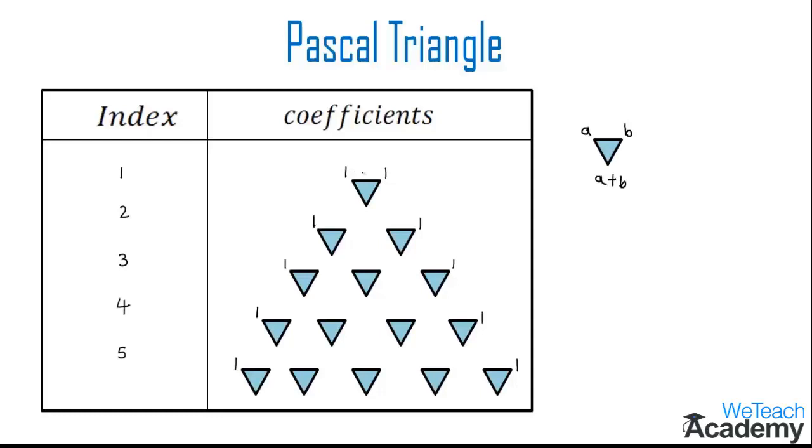Here in the previous row we have a triangle which is bounded by one and one, and by adding one and one we get here two. And similarly coming over to the next row, if we add one plus two we get here three, and here by adding two plus one we get three.